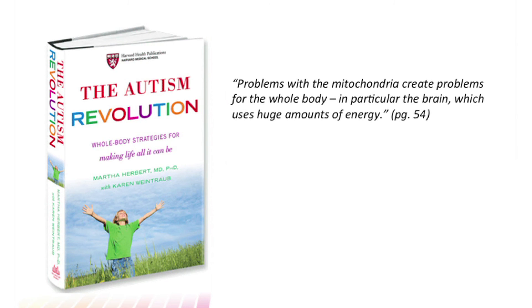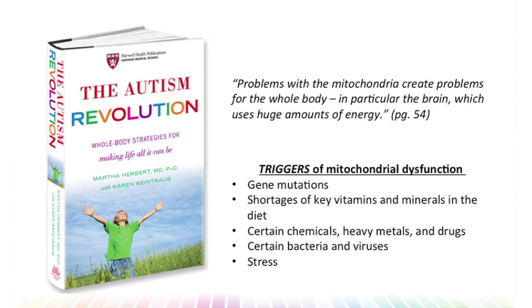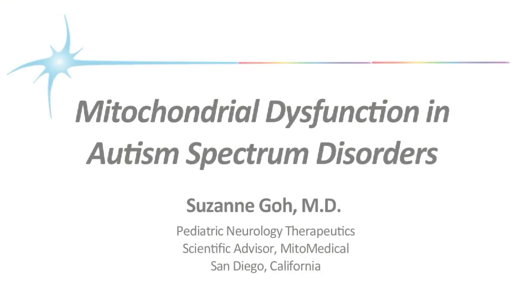This book by Martha Herbert, a pediatric neurologist and professor at Harvard Medical School, has been very important in bringing attention to mitochondrial dysfunction and other treatable medical aspects of autism. She explains that problems with the mitochondria create problems for the whole body, in particular the brain, which uses huge amounts of energy. She also describes how many different types of triggers can lead to mitochondrial dysfunction, including gene mutations, shortages of key vitamins and minerals in the diet, certain chemicals, heavy metals and drugs, certain bacteria and viruses, and stress. Mitochondrial dysfunction is thus a potential explanation for how many different types of environmental factors might lead to autism.